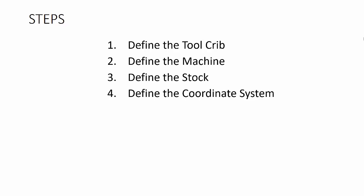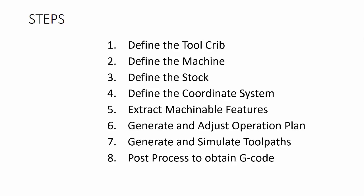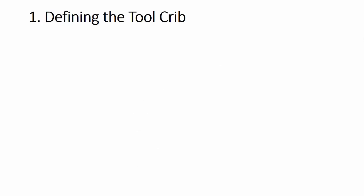Then we need to define the coordinate system. Then we need to extract all the machinable features of the part that we're going to be machining. Once we've extracted the machinable features, we need to generate and adjust the operation plan. After that's all adjusted, we can generate and simulate the toolpaths. Once we've got the toolpaths all figured out, we can post-process to obtain the G-code, which is just a text file that we can save to a USB drive and take to the CNC mill in the MakerLab.